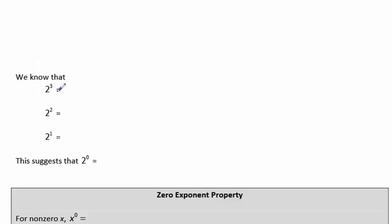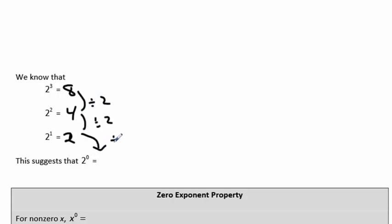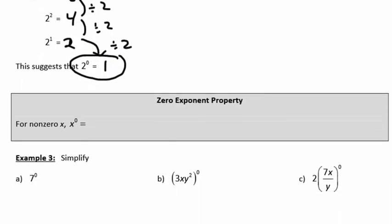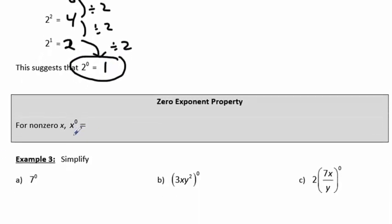We know that 2 cubed is 8, 2 squared is 4, and 2 to the 1st power is 2. Going down the list and decreasing the exponent by 1, you're dividing by 2 each time. Therefore, it makes sense that 2 to the 0 — reducing the exponent by 1 more — will be 2 divided by 2, or 1. The zero exponent property says that for any non-zero x, x to the 0 power is 1.